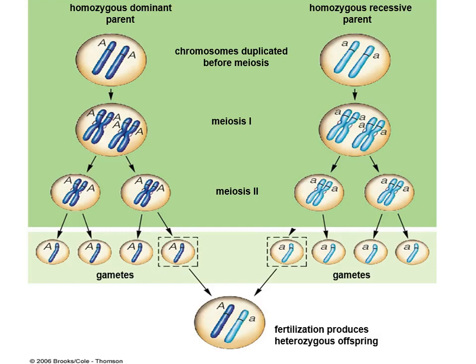Before we walk through a Punnett square, I want you to try and visualize it on the chromosomes using this diagram. Here's our true breeding dominant parent with two homologous chromosomes, each carrying the same gene — these are the alleles of that gene. If it's a true breeding parent, homozygous dominant, both alleles are going to be the dominant trait — purple flowers, for example.